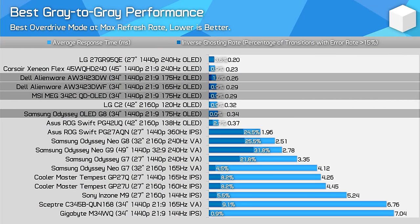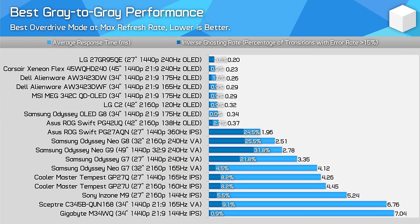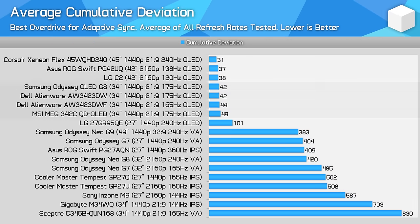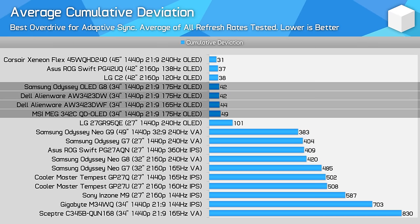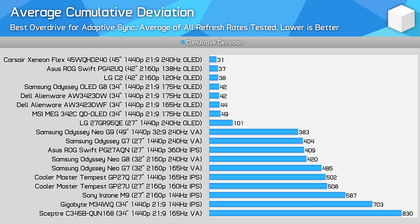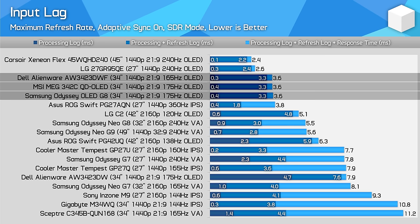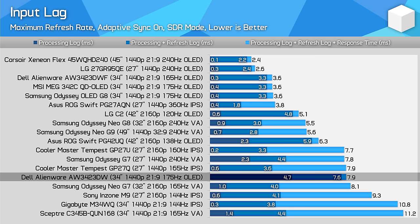Motion performance is effectively identical across the four monitors. As they use the same QD OLED panel, response time and general screen behaviour is the same, meaning no matter which model you choose, you can expect lightning fast response times and an artifact-free experience. Performance is held very well across the refresh rate range on all four. Input latency does differ though: the Alienware DWF, MSI 342C, and Samsung OLED G8 all feature excellent input lag with instant processing delay, while the Alienware DW has around 5ms of processing delay, making it less responsive than the others.